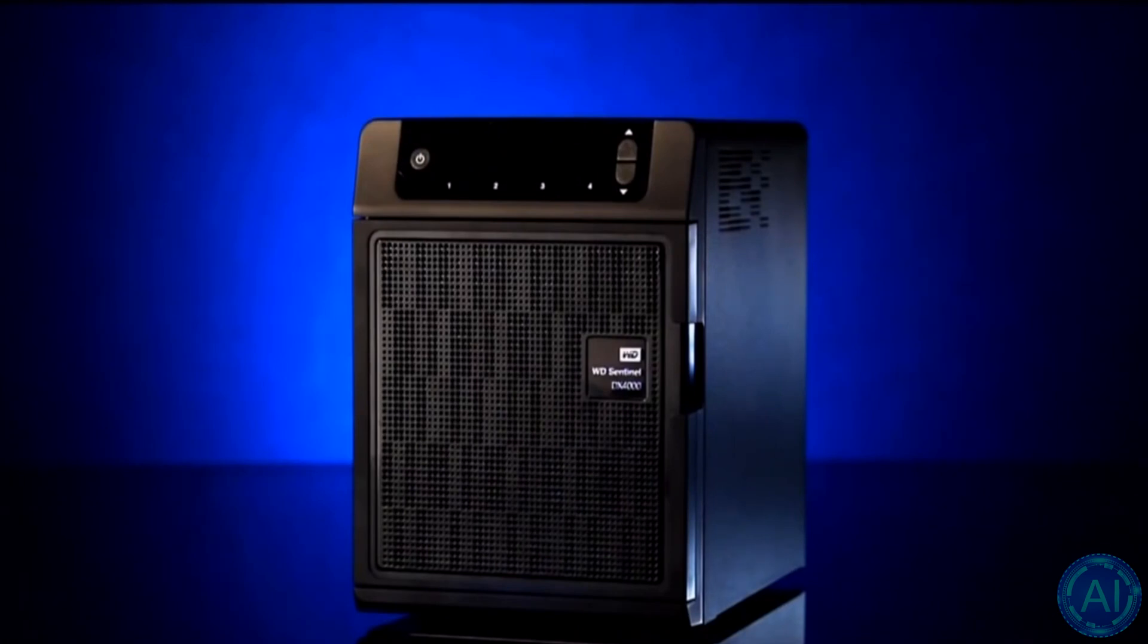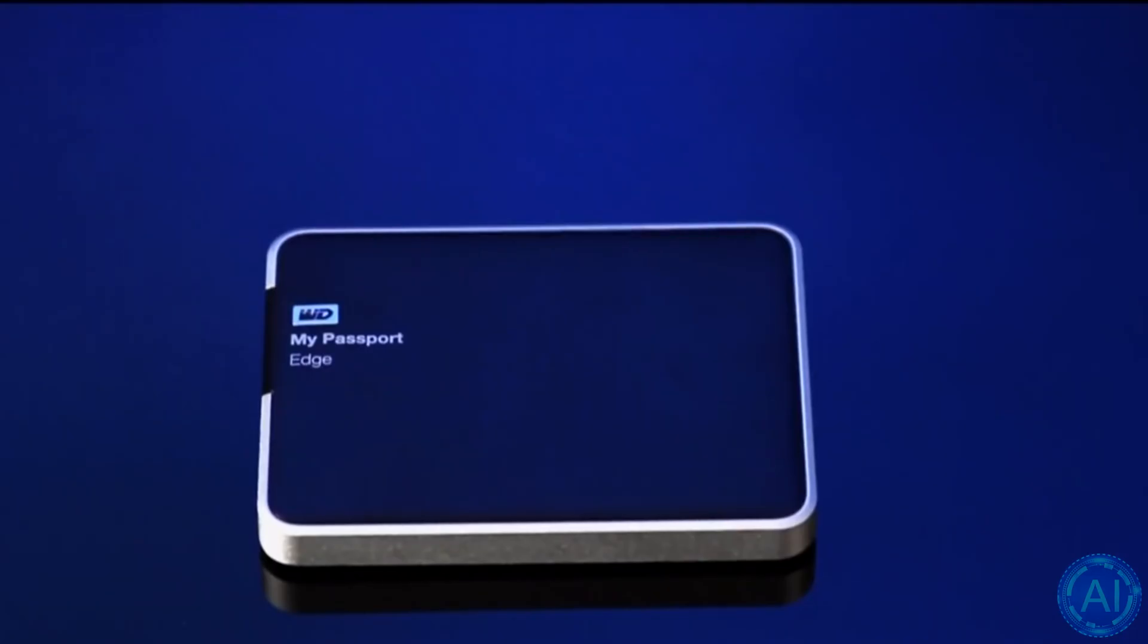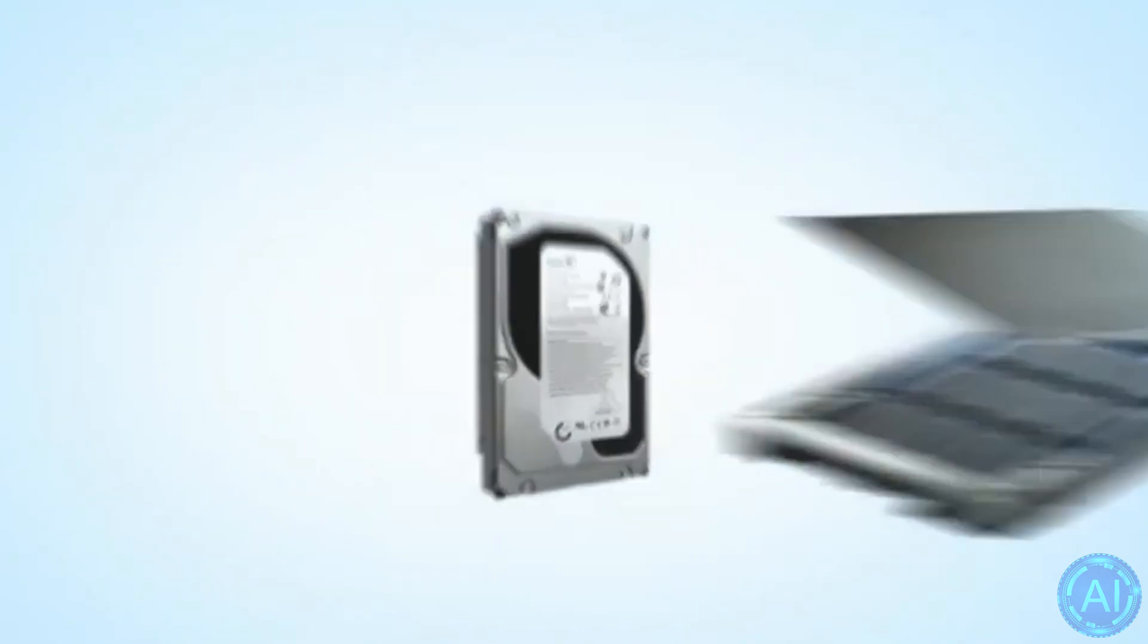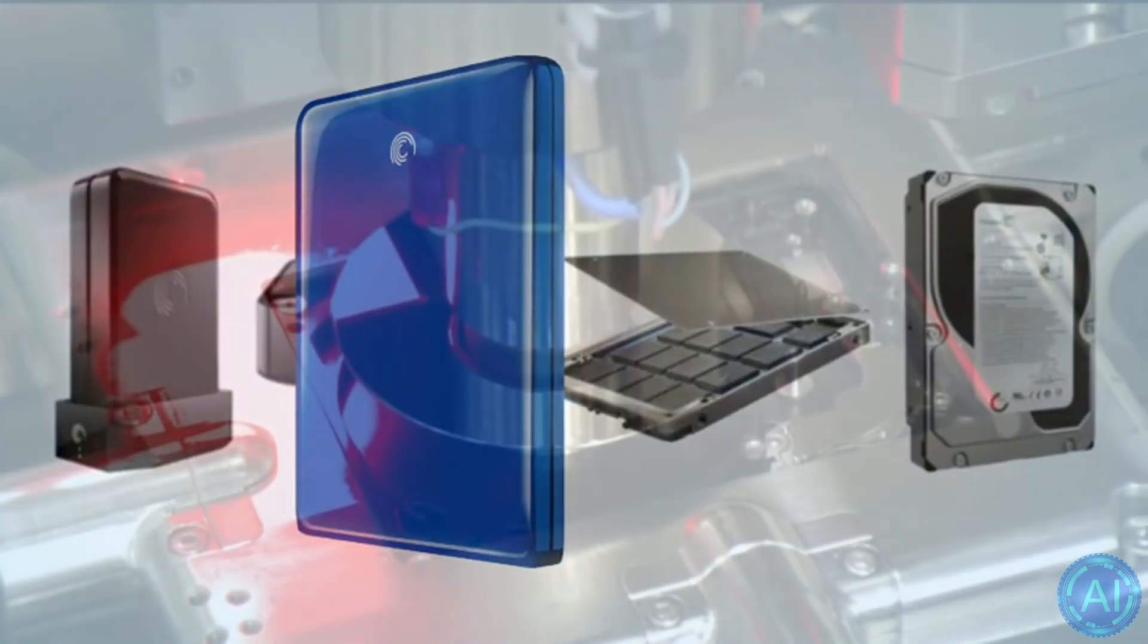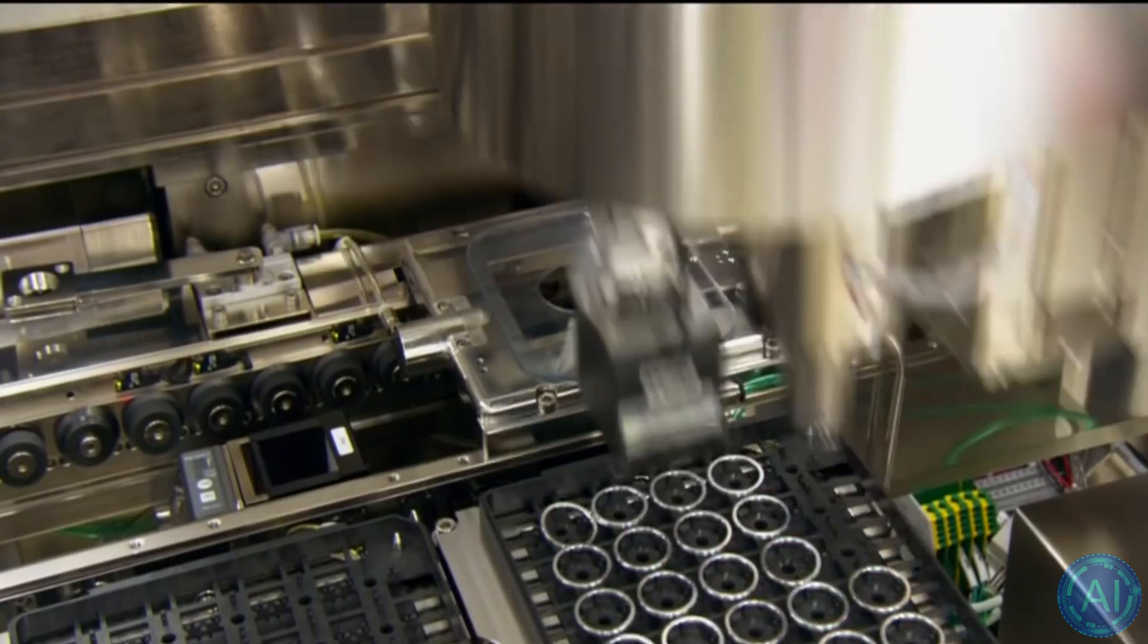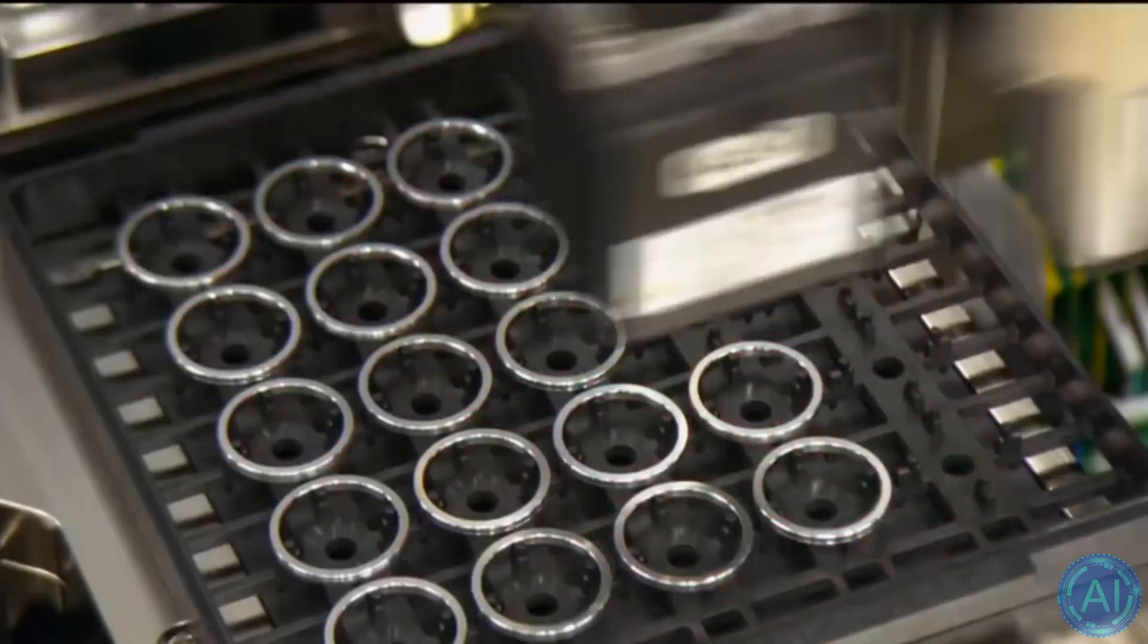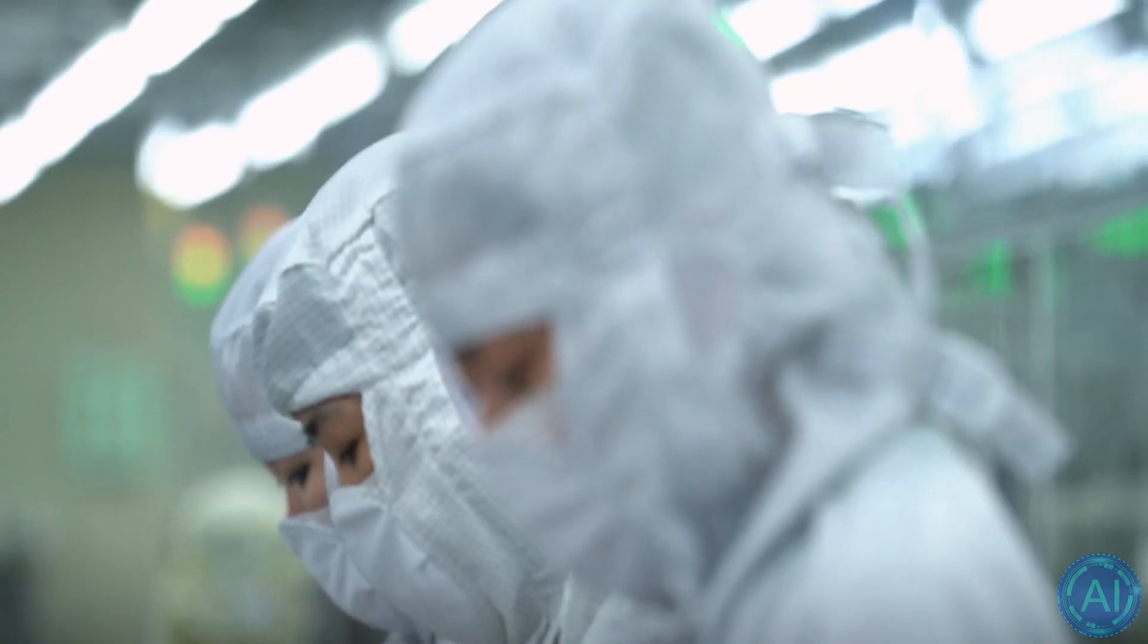Seagate and Western Digital have been working on ways to dramatically improve HDD sequential and random performance by combining multiple actuators and read/write heads into a single disk. Seagate's Mach 2 technology, which uses two actuators, may nearly quadruple a hard drive's IOPS per TB performance and significantly boost sequential read/write rates. Furthermore, Seagate can practically cut the time it takes to test one drive before shipping using two separate actuators, lowering its production expenses.